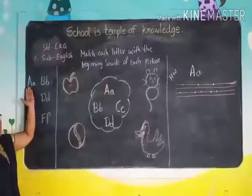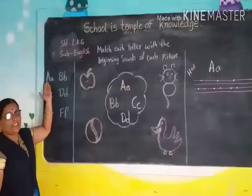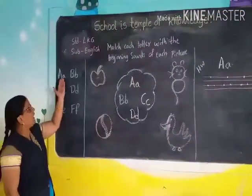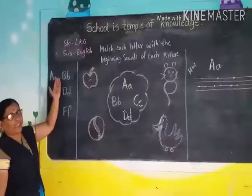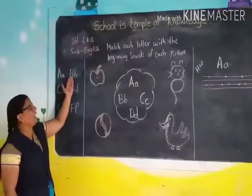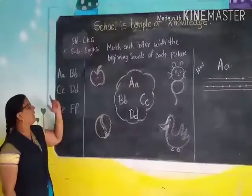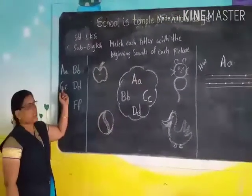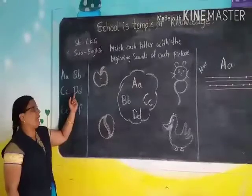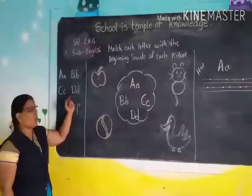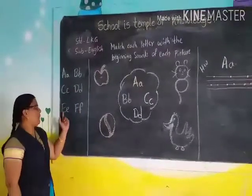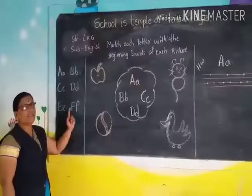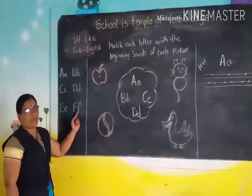First, read the letters. Capital A, small a. Capital B, small b. Capital C, small c. Capital D, small d. Capital E, small e. Capital F, small f.